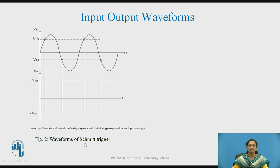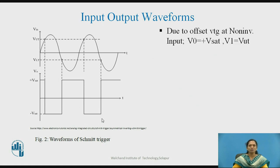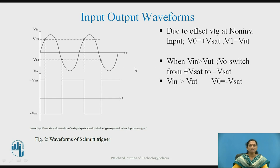Look at the waveforms of the Schmitt Trigger circuit. Initially, due to the offset voltage at the non-inverting input, the output voltage will be +Vsat. This is the initial condition. Therefore, V1 — the voltage at the non-inverting terminal — will be the upper threshold voltage VUT, calculated as R1/(R1 + R2) × (+Vsat). When the input signal exceeds this voltage, i.e., Vin > VUT, the output voltage switches from +Vsat to −Vsat.